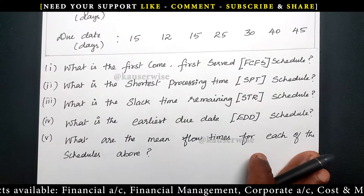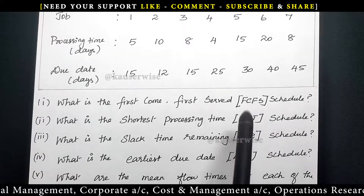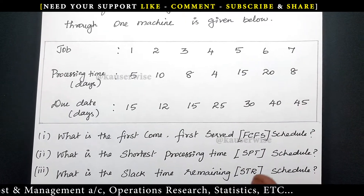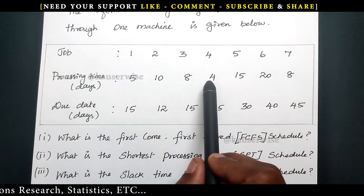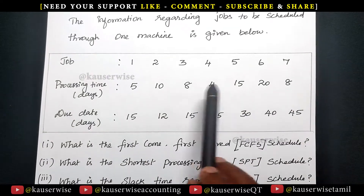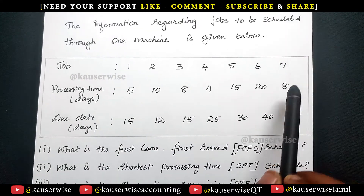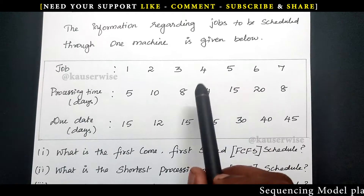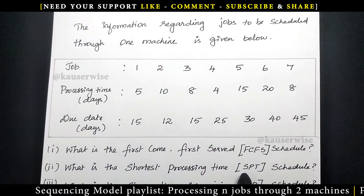Now the second one is: what is the shortest processing time schedule? According to this rule, we have to consider the processing time. We have to select and process based on the shortest, that is the least duration. Which is the least duration? 4. So assign job 4 first. The next least duration is 5, so job 1 will be the second. The next duration is 8 — here we have 2 different jobs with the same duration, but we have to follow the order, so first job 3 and then job 7. The next least value is 10 days, then 15 days so job 5, and last one 20 days so job 6.